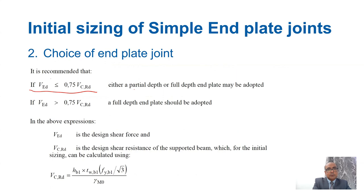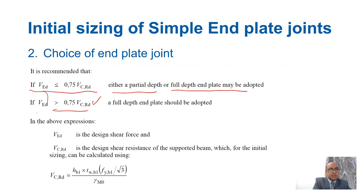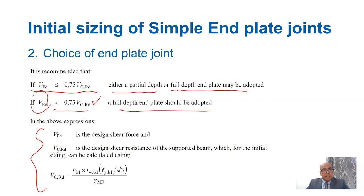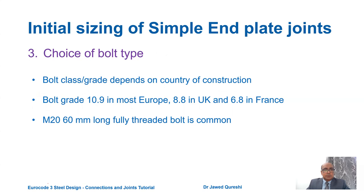First we have to choose the end plate type. If the applied shear force is less than or equal to 0.75 Vcrd, we can use either partial or full depth end plate joint. If it is greater than 0.75 Vcrd, then a full depth end plate joint must be adopted. For choice of bolt, normally we use grade 8.8, which is the most common, and M20 60mm long.